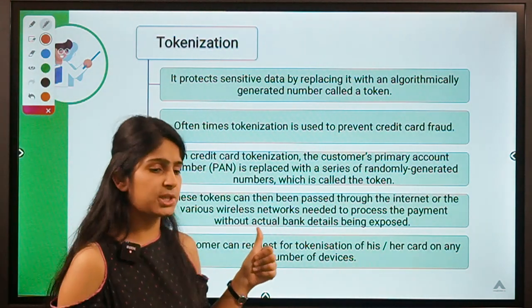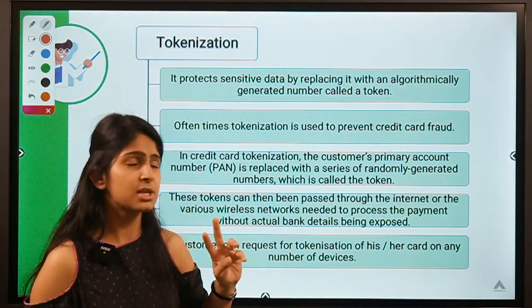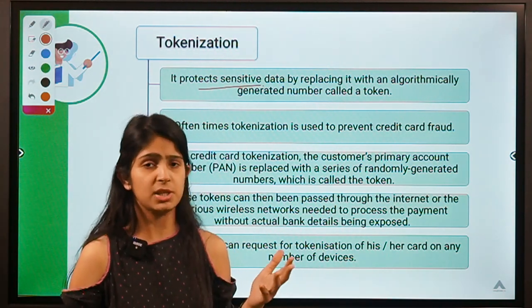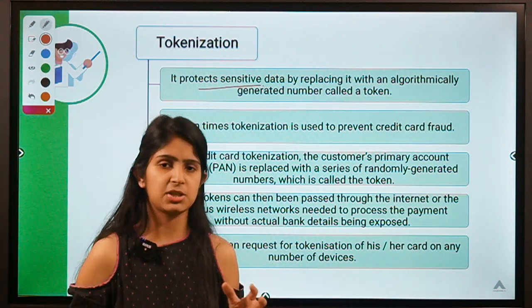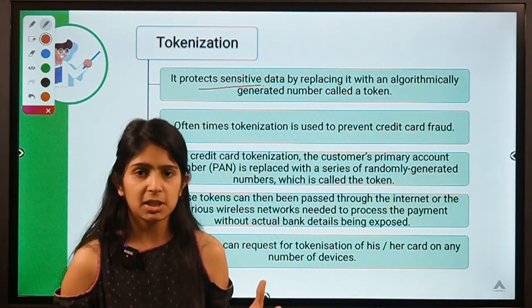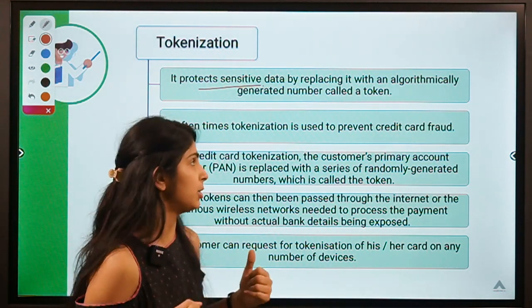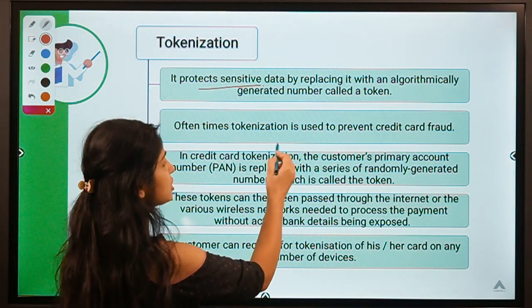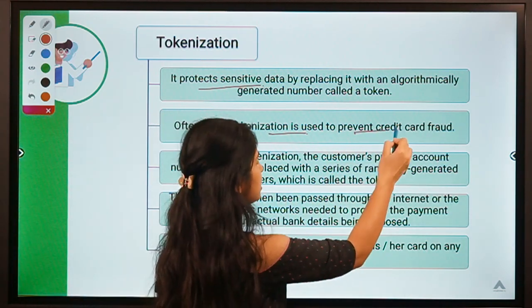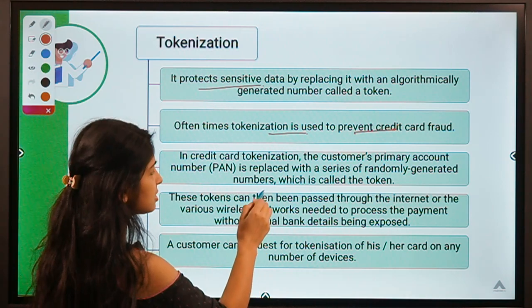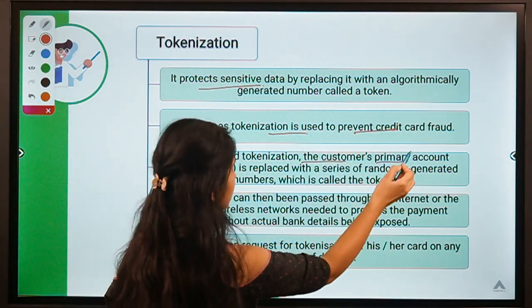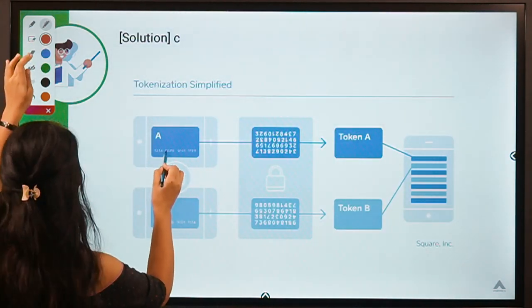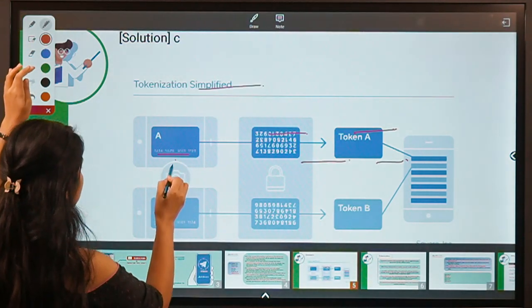The objective of tokenization is to protect sensitive data. RBI came up with this process in 2019 so that credit card transactions could be protected from online theft or fraud. Tokenization is used to prevent credit card fraud — the customer's primary account number, the 16-digit number on your card, is converted into a series of randomly generated numbers called the token.